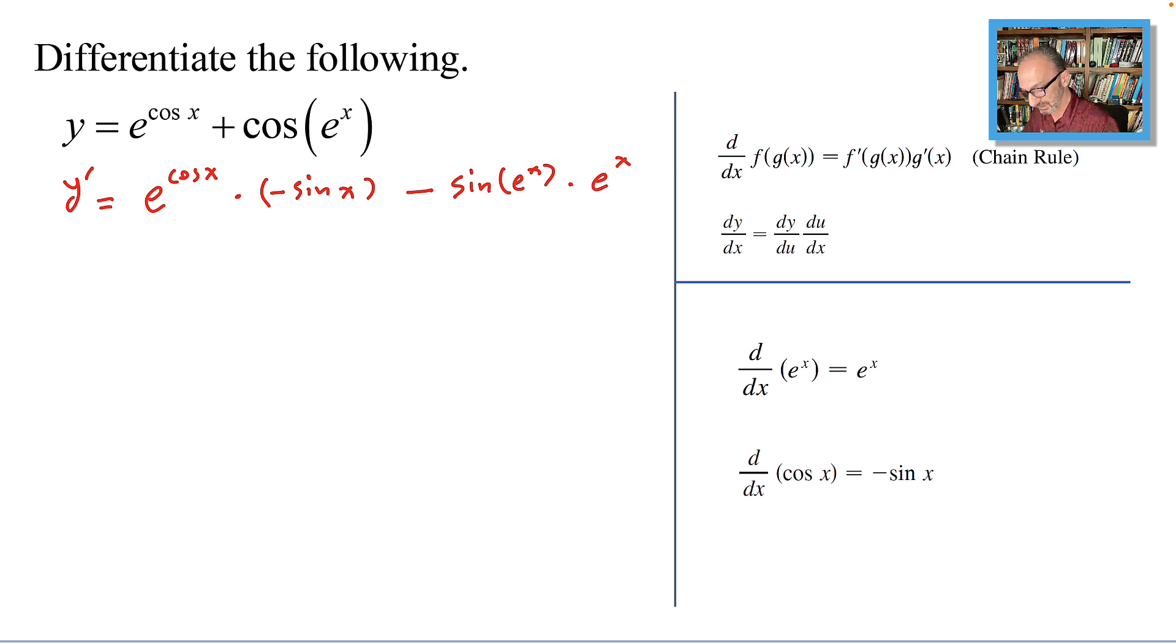Simplifying this, we will end up with minus sine x multiplied by e to the cosine x minus sine e to the x multiplied by e to the x.